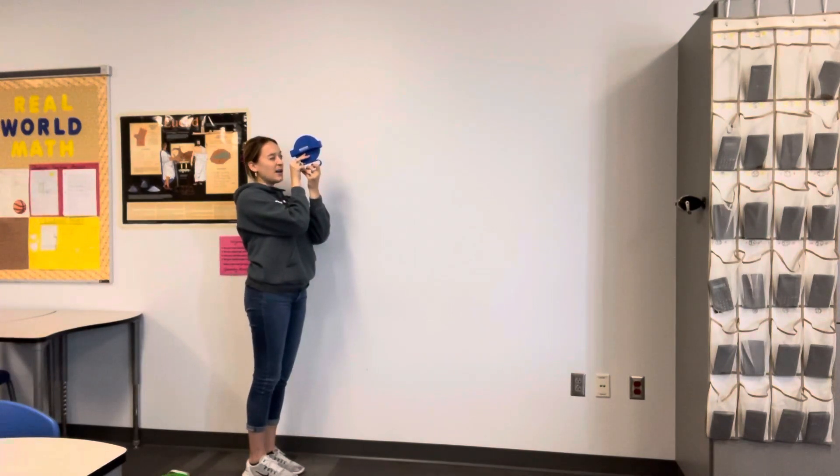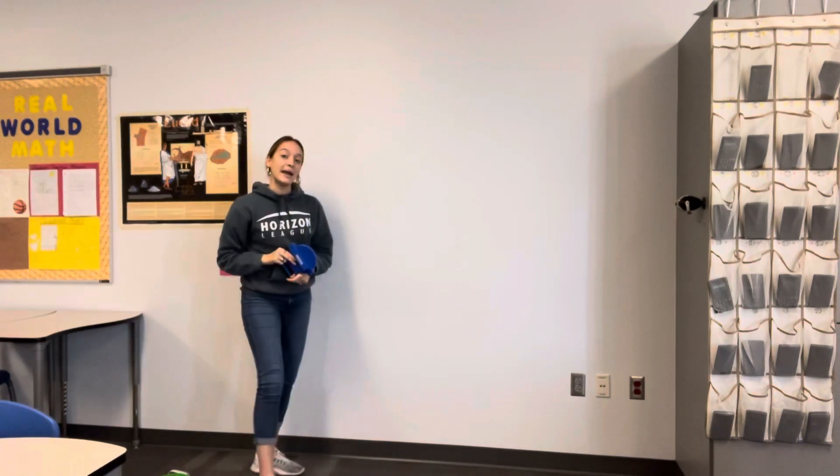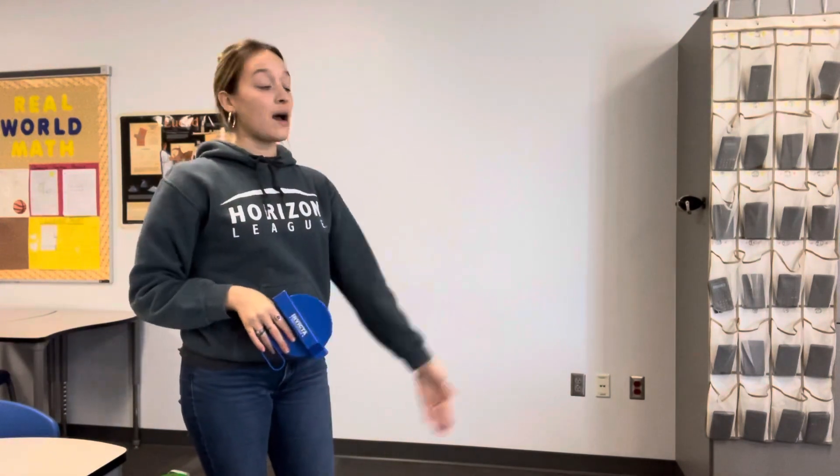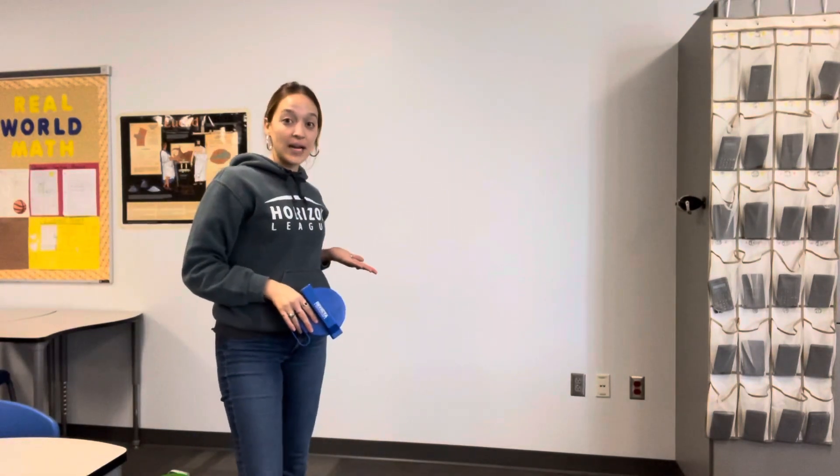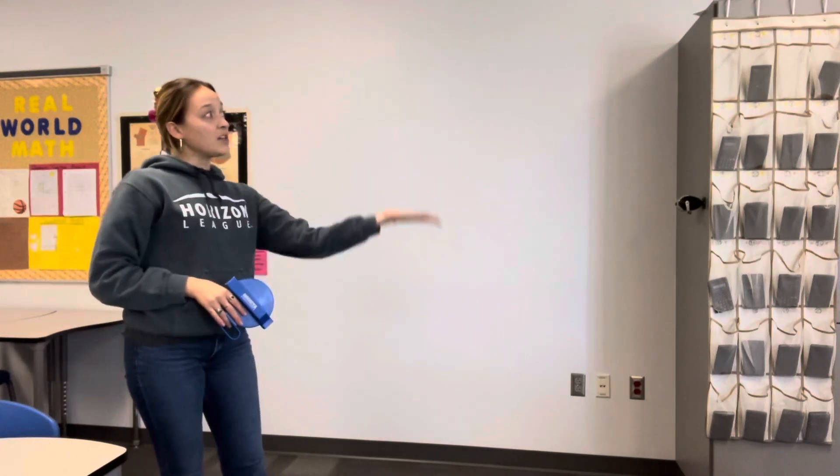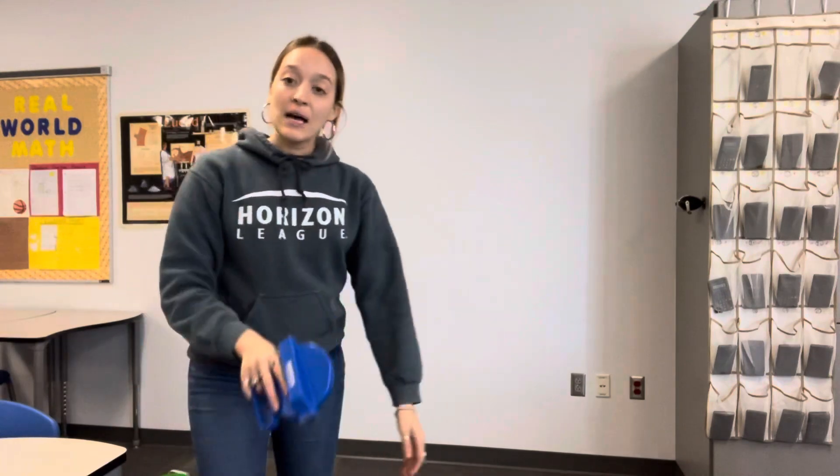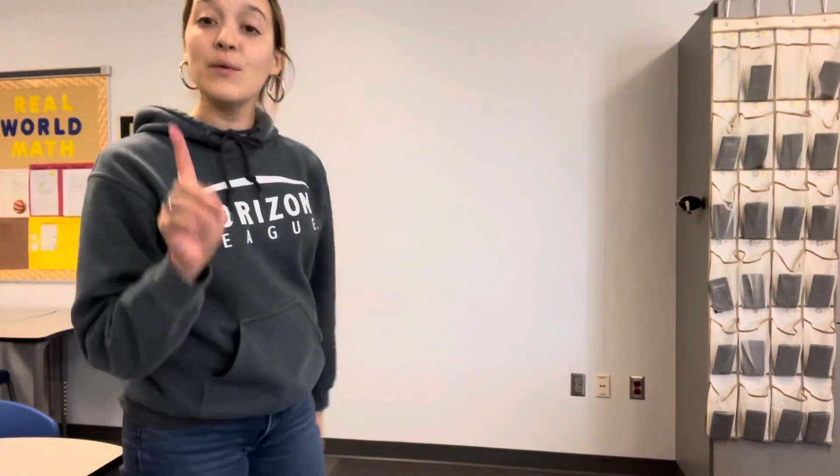It looks like it is 16 degrees, so my angle of elevation is 16 degrees. Now I've got the base at six feet, I've got my angle of elevation which was 16 degrees, and now I can solve for the unknown height. However...